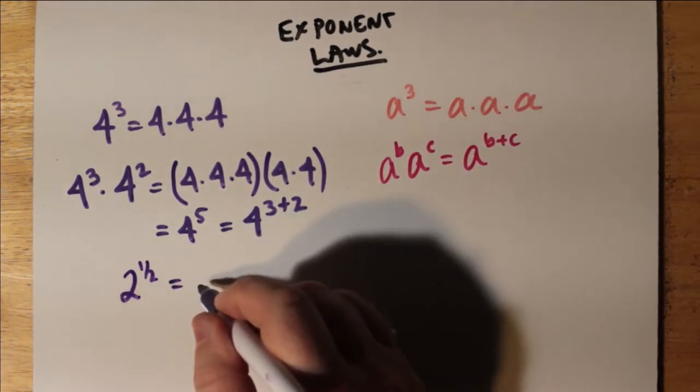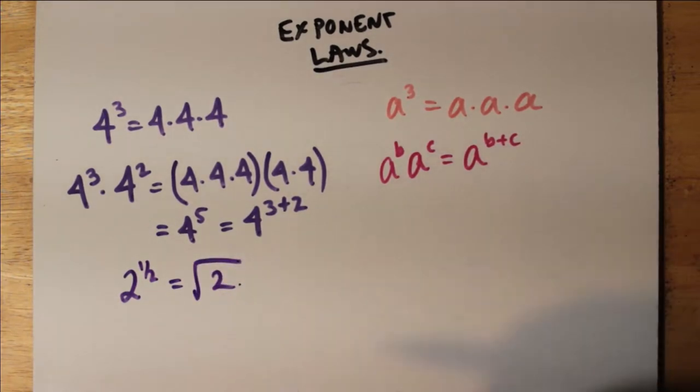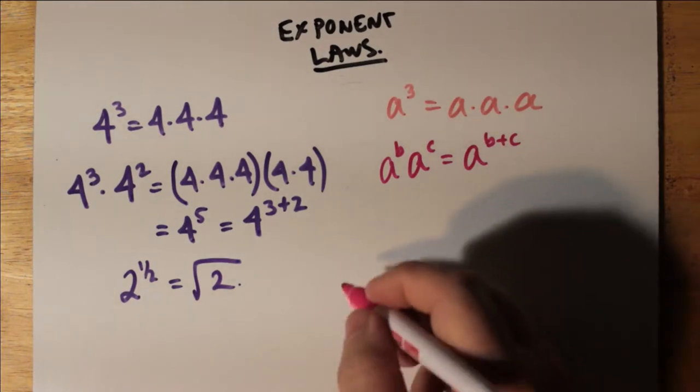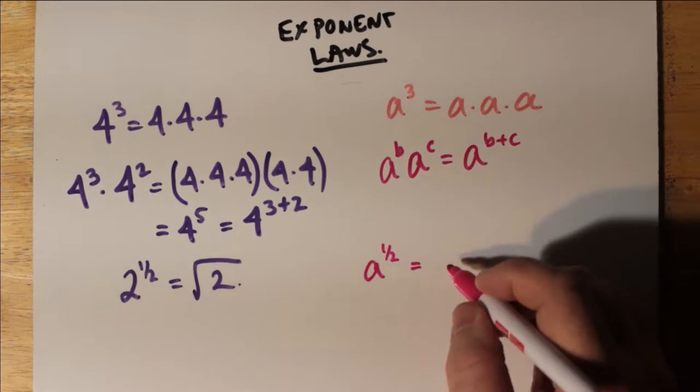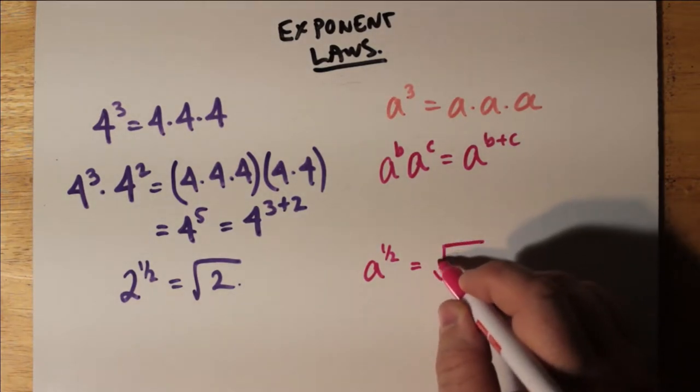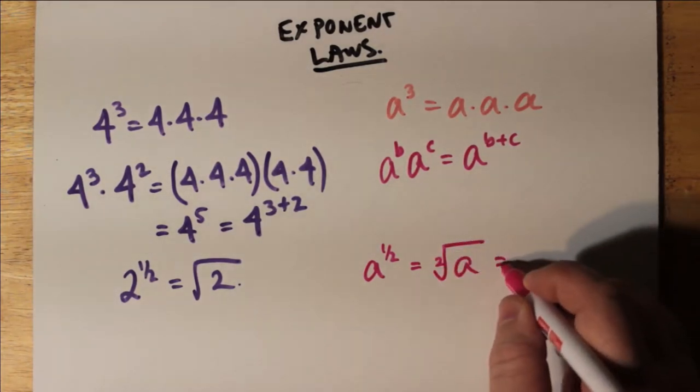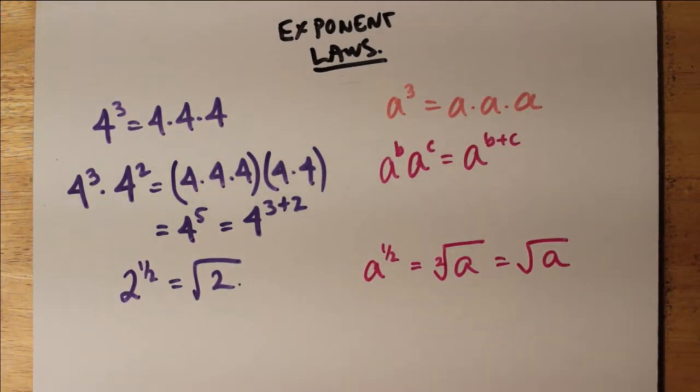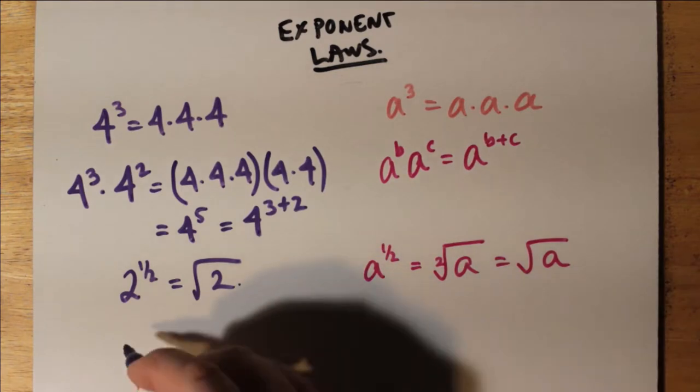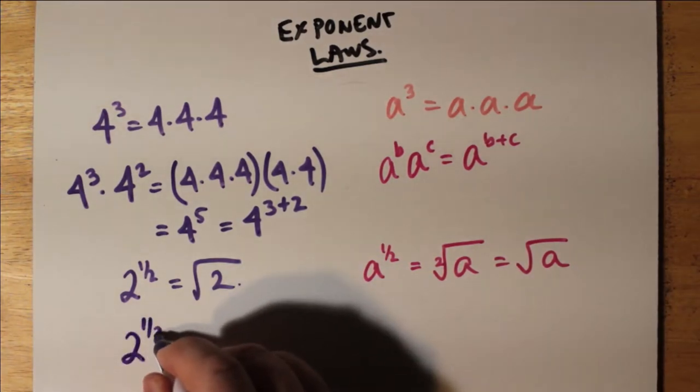If an exponent is fractional, then we do things a little differently. 2 to the 1 half is just the square root of 2, so that any base to the power of 1 half is just the square root of that base. And we don't have to write the 2 inside the square root. We can just leave it out and just say the square root of a, put the a under the square root symbol.